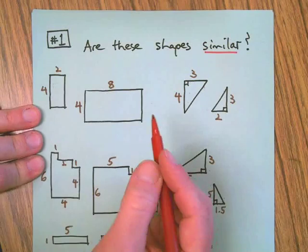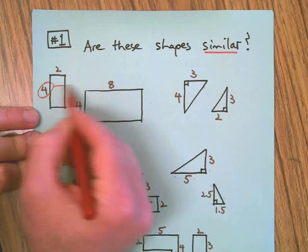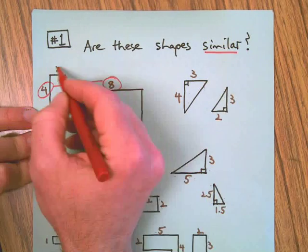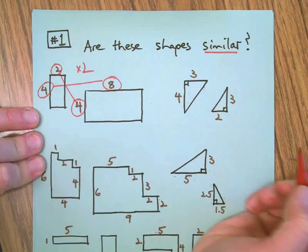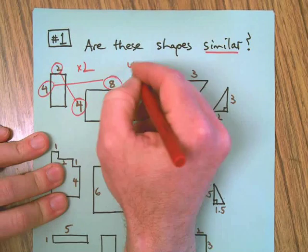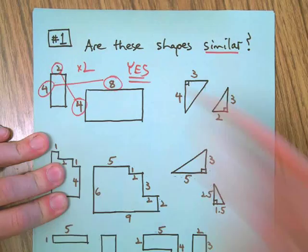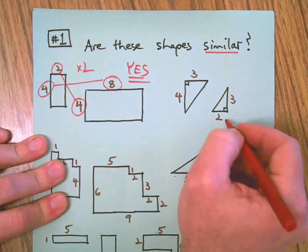First we need corresponding sides. Four corresponds to eight, two corresponds to four. That's times two both ways, so that's a yes, they're similar. Next corresponding side, we got to do a little flip action here.